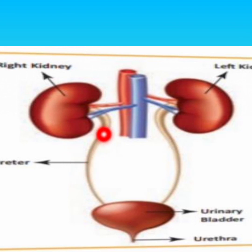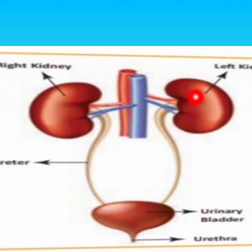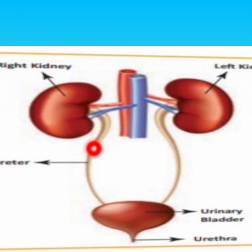Next, the ureter. Two ureters connect the kidney with the urinary bladder. Urine formed in each kidney reaches the urinary bladder through the ureter. The urinary bladder is a sac-like structure that acts as a temporary storage organ for urine.